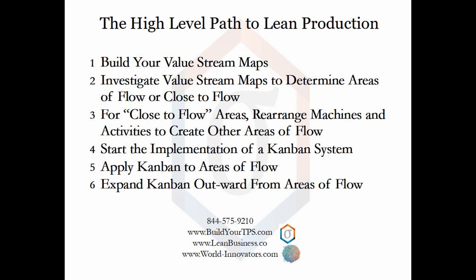Kanban is one of the pillars of the Toyota production system. Kanban is a pull system, and in this step, you investigate its implementation. Step five is the real implementation of lean production. The concept here is to start small. Step six is to start moving Kanban out from the designated areas of flow to adjoining processes. This step can potentially be very time-consuming, but there are ways to speed it up.